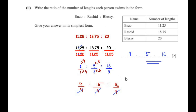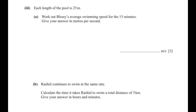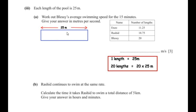Now the next sub-question: each length of the pool is 25 meters. Work out Blessie's average swimming speed for the 15 minutes, giving your answer in meters per second. Let us consider this as the swimming pool where one length equals 25 meters.